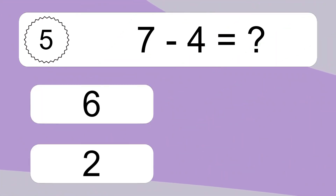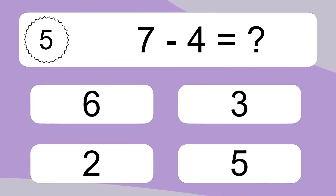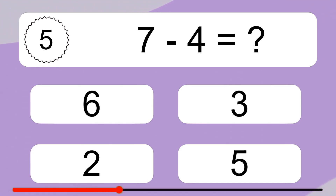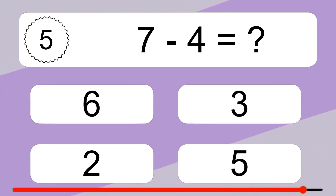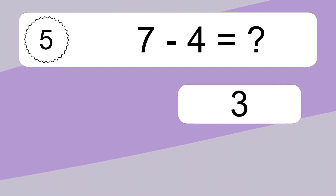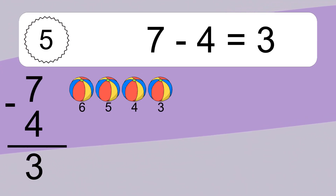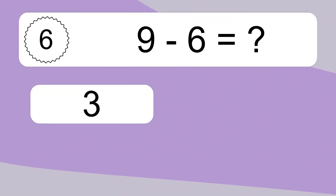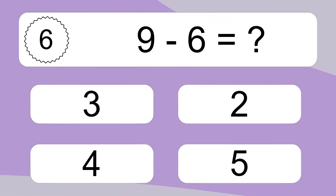7 minus 4 equals what? 7 minus 4 equals 3. Let's count it: 6, 5, 4, 3.